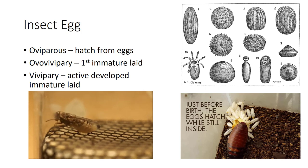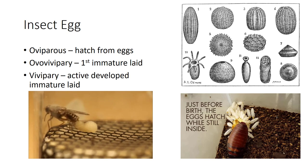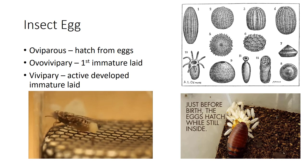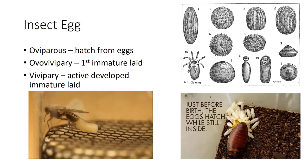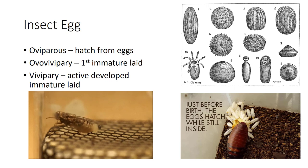Aphids will also be mainly wingless, but viviparous adults may produce some winged versions depending on the environment. In autumn, some females will become oviparous—males being produced at this time—go through sexual reproduction, and lay eggs so that the insects can overwinter in that stage. Then hatches a stem mother, which is again ovo- or viviparous. Insects are amazing, aren't they?